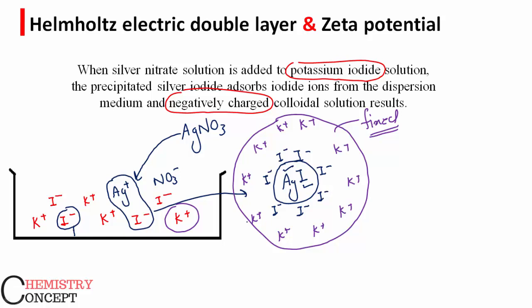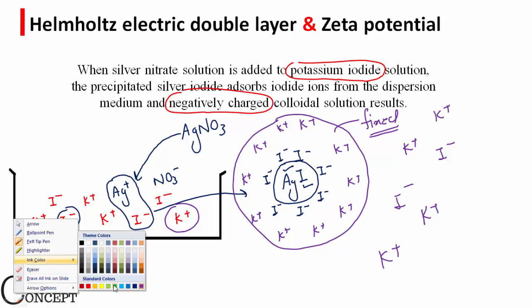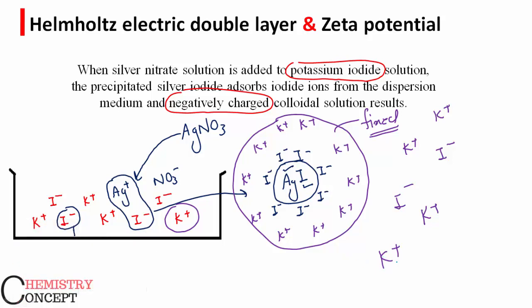On the other hand, the other potassium and iodide ions which are not that strongly attracted form a different layer, or it is called a diffused layer, a mobile layer which is almost free to move.